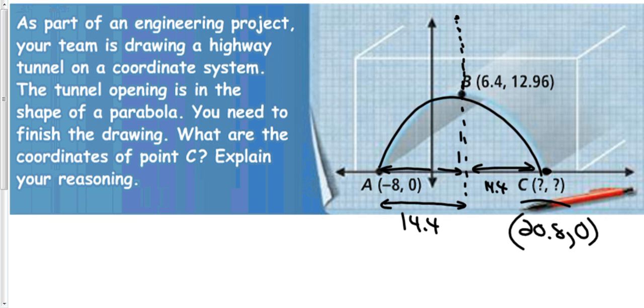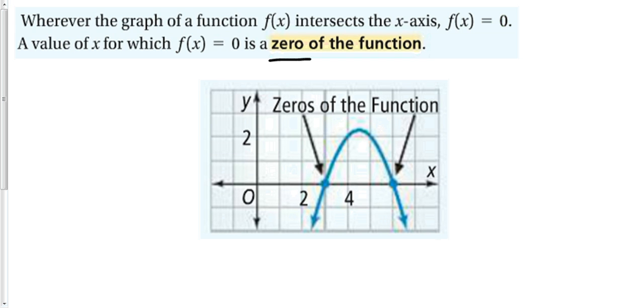So now we have three interesting points on this parabola. We have these two points, the two points where the parabola crosses the x-axis, and we have this point B, the vertex. Those are going to be the three most important points when we are trying to figure out, when we're working with parabolas. We have learned how to find the vertex, now we're going to learn how to find the two x-intercepts, also called the zeros of the function.